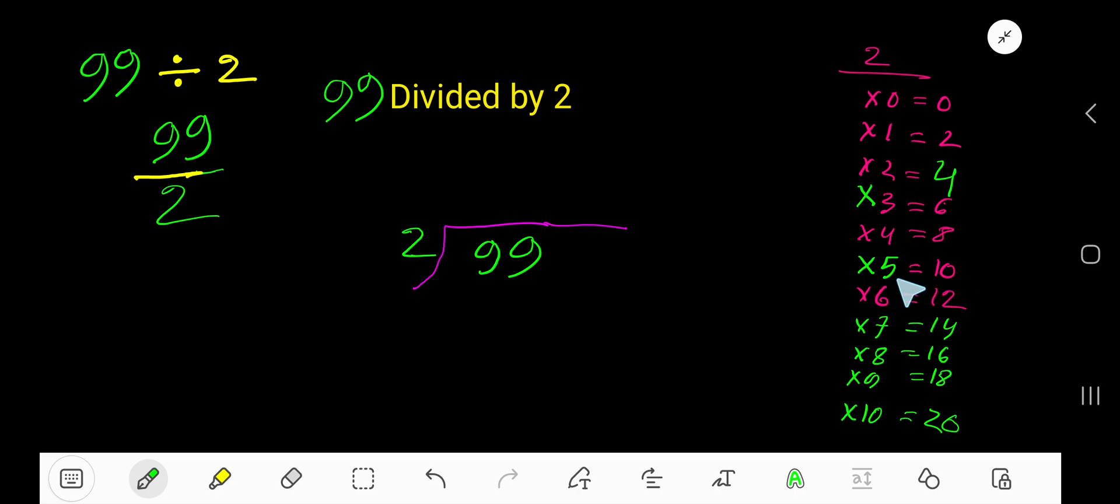2 goes into 10 five times which is greater. 2 goes into 9 four times. 2 times 4 is 8. Subtract, you are getting 1. Bring down this 9. 2 goes into 19 how many times?